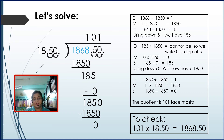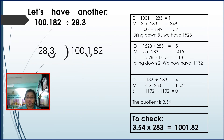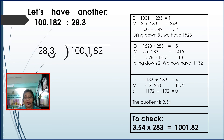Let's have another example. We have 100.182 divided by 28.3. As you can see, we have a decimal number. In our divisor, 28.3, we move the decimal point one place to the right to make it a whole number. In the same manner, we also move the decimal point in the dividend one place to the right.